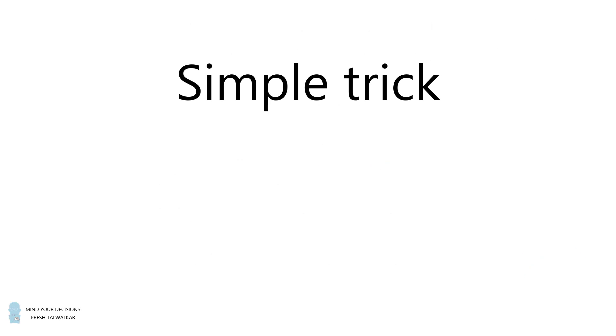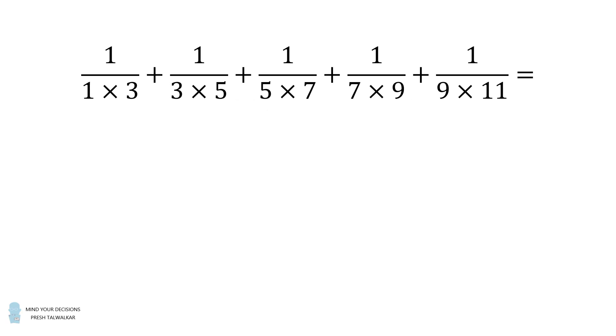I will first present solutions to these problems and then I will give a proof of why the technique works. Let's get started with the first problem. So how do we solve this sum very quickly? First count the number of terms in the sum. There are five terms. That's the numerator of the answer.